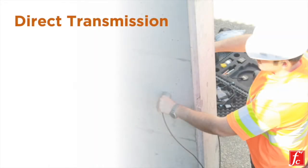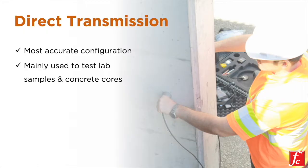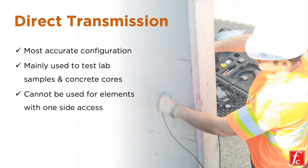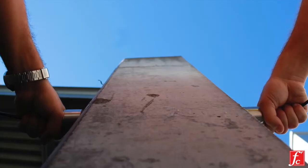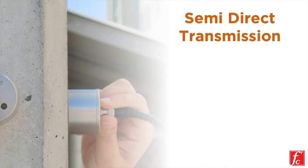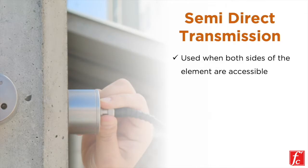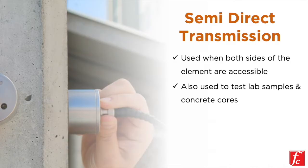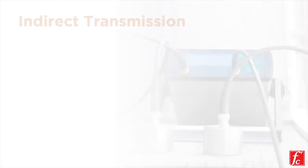The most accurate configuration is the direct transmission, mainly because the maximum energy of pulse is transmitted and received. However, this configuration is mainly used to test lab samples or concrete cores and cannot be used in the field for elements with one side access only. If two sides of the element are accessible, then a semi-direct transmission configuration can be used. This configuration can also be used to test lab samples and concrete cores.